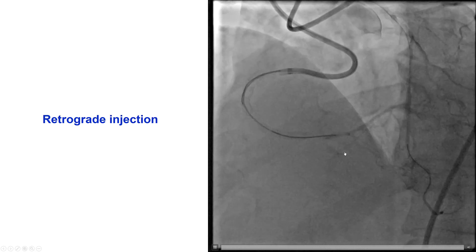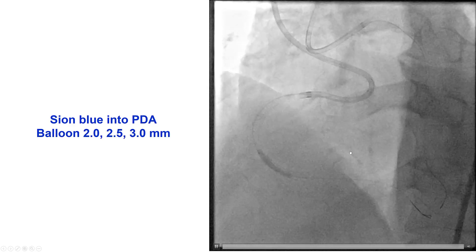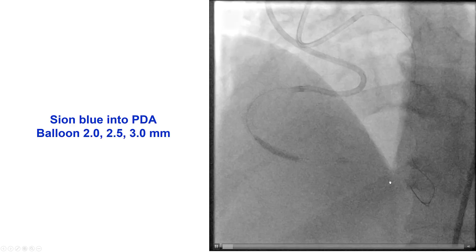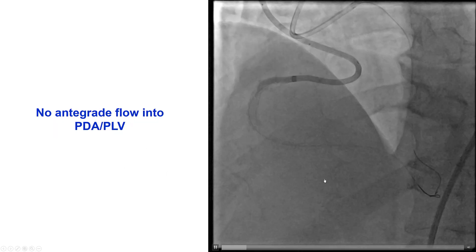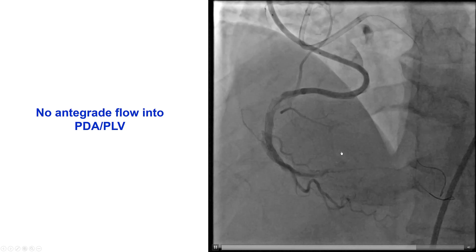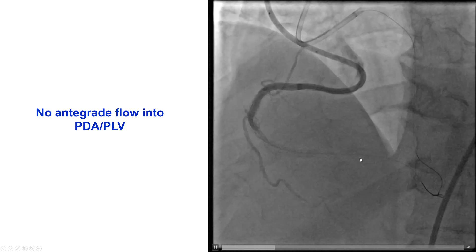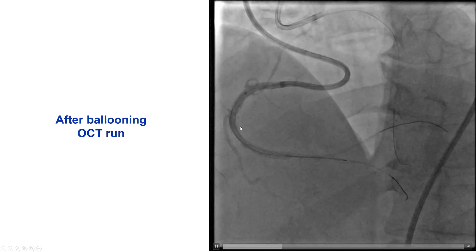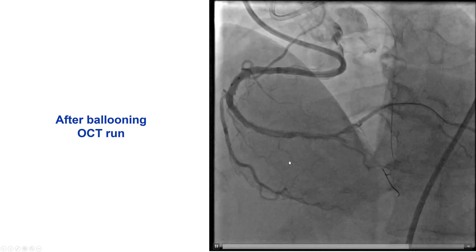Contralateral injection confirmed that we had crossed into the distal true lumen. We then exchanged for a workhorse guide wire into the PDA and performed balloon inflation with serially larger balloons. Unfortunately, there was not really any good antegrade flow, which was of concern. We performed more balloon inflation, and then TIMI-3 flow was established.